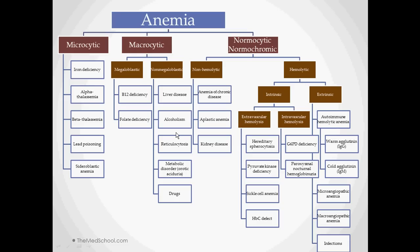And then your normocytic anemias can be broken up into non-hemolytic and hemolytic. So either we're destroying red blood cells or we are losing red blood cells, as in sometimes an anemia of chronic disease, or we're just not making enough red blood cells like an aplastic anemia of kidney disease.